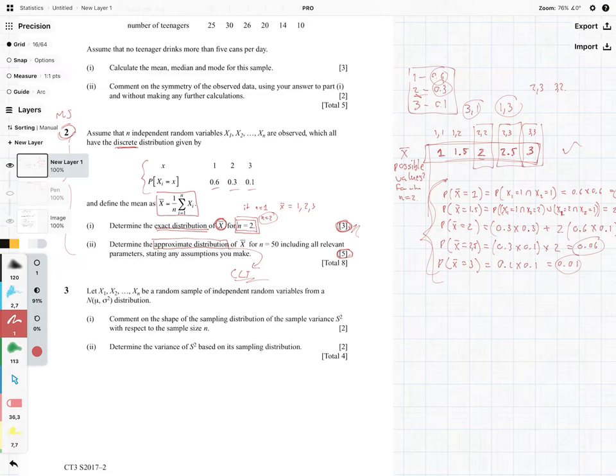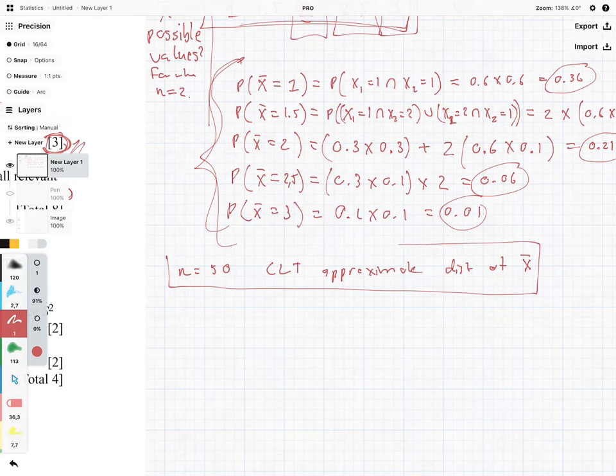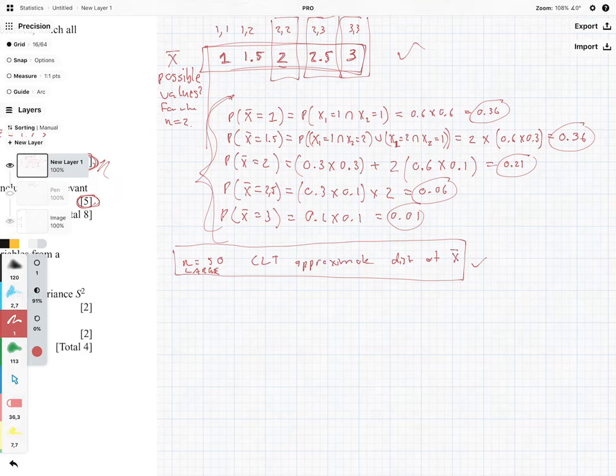Part 2 of the question says determine the approximate distribution of x bar for n equals 50, including all relevant parameters stating any assumptions you make. What we can say is, because n equals 50, we can now use the central limit theorem to approximate the distribution of x bar. You must write that out. You must identify that for n equals 50, that's large enough to use the central limit theorem. You get a mark for that.